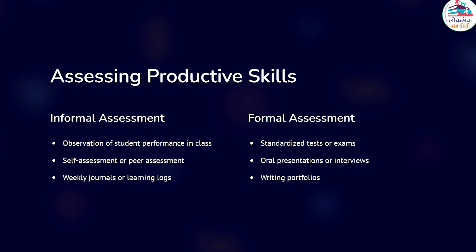Now we look at assessing productive skills. We can evaluate students in terms of productive skills in two ways: informal and formal assessment. In informal assessment, teachers observe student performance in class, encourage self or peer assessment, and provide weekly journals or learning logs. In formal assessment, parameters include standardized tests or exams, oral presentations, and writing portfolios that encompass the student's productive skills ability.